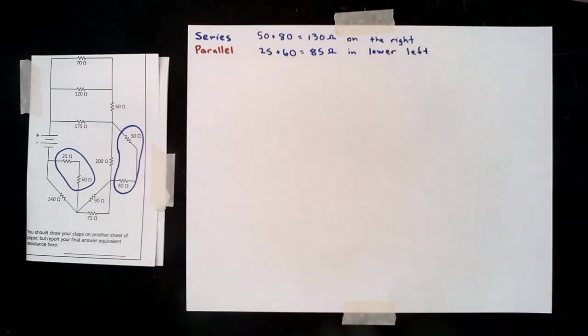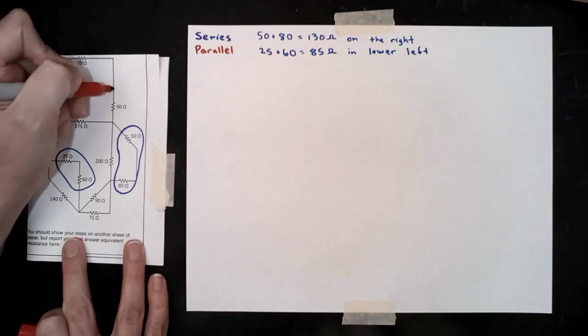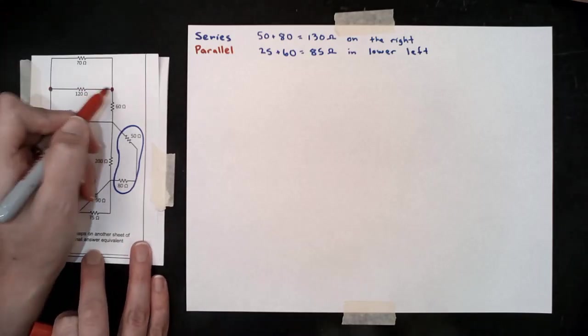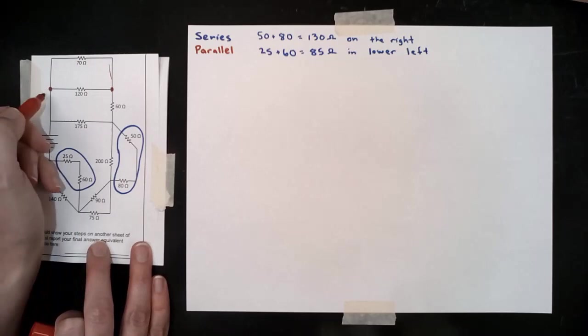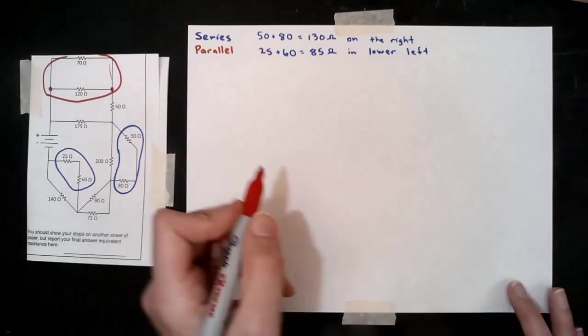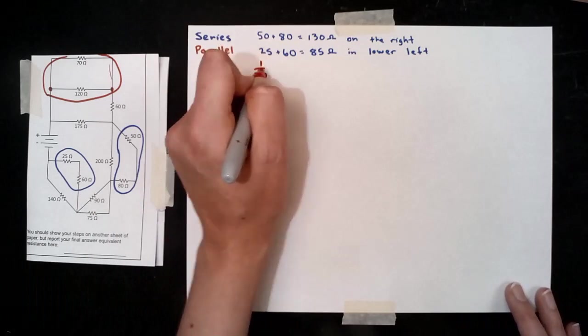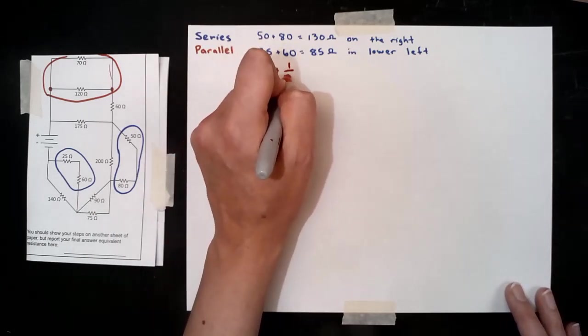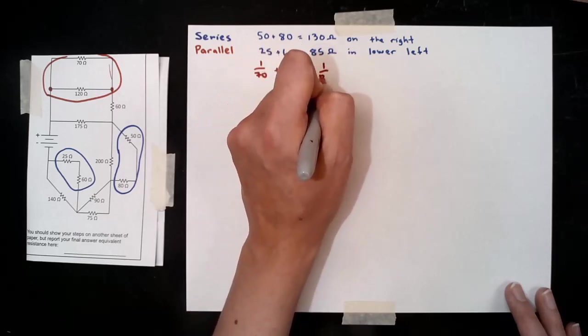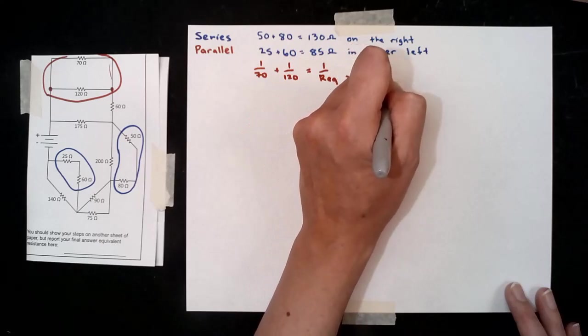Parallel can be trickier, but we'll find them. Here at the top, only those top two are in parallel. They're hooked together on either end with nothing in between them. We cannot include the 175 ohms yet, even though it looks nicely lined up, because that 60 ohm resistor is in the way. Only those top two are currently in parallel the way that we need to be thinking about that definition.